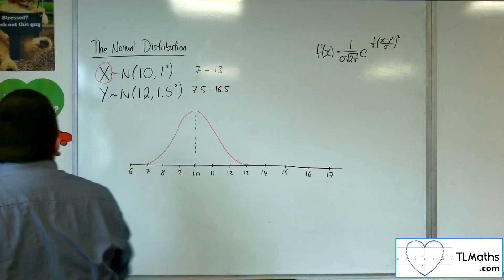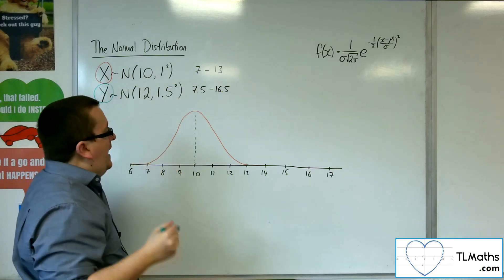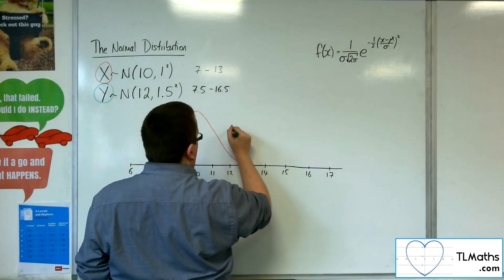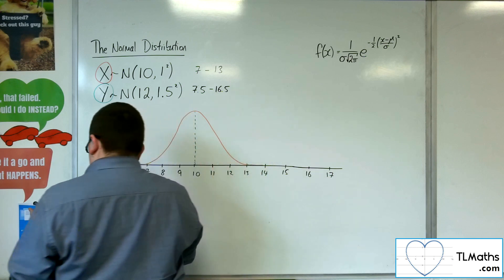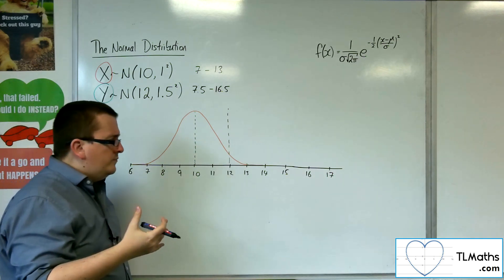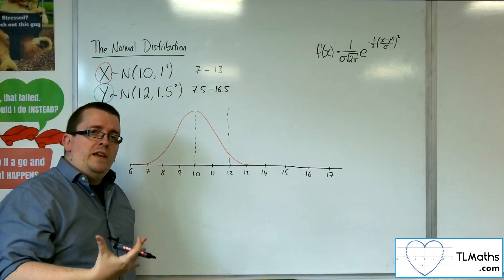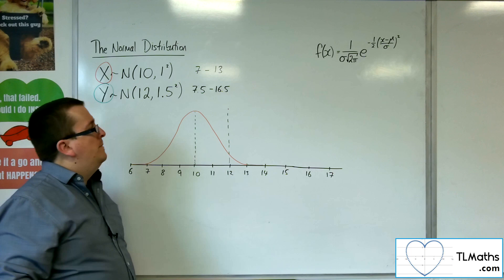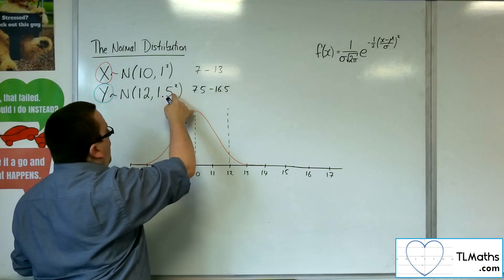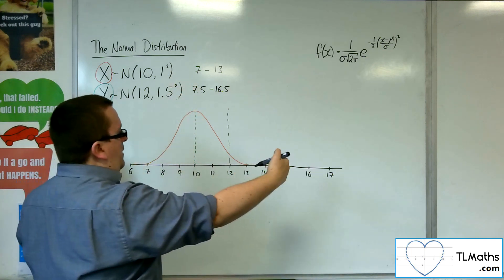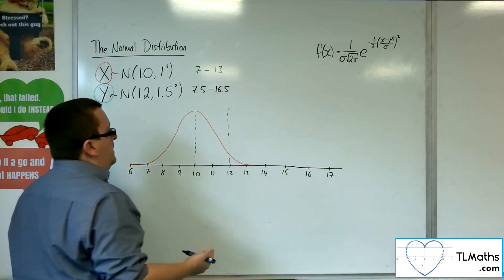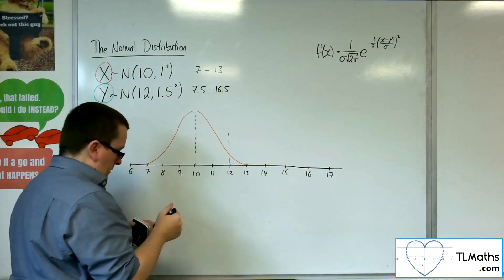As for my second normal distribution Y, it has its mean at 12. Now one thing we've got to consider is, are they both the same height? Let's think about that for a moment. Remember that the area of the normal distribution is 1, and if that's the case, then this one is going to have to be wider than that one because it's got a larger standard deviation, it's more spread out. And because it's more spread out, it's going to have to be shorter.